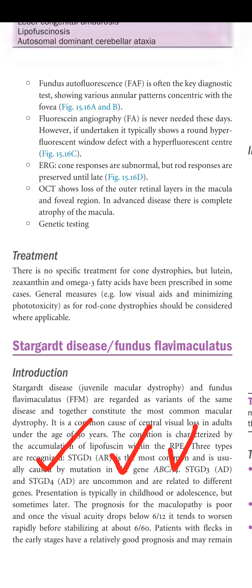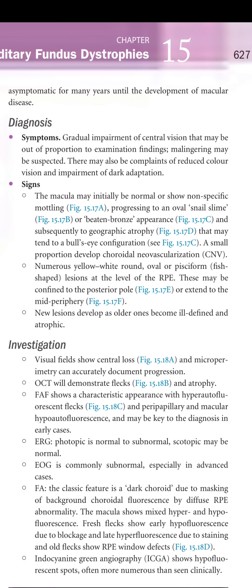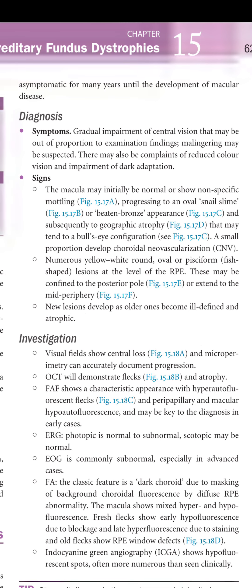The prognosis for maculopathy is poor. Once visual acuity drops below 6/12, it tends to worsen rapidly before stabilizing at about 6/60. Patients with flecks in the early stage have a relatively good prognosis and may remain asymptomatic for many years until the development of macular disease.